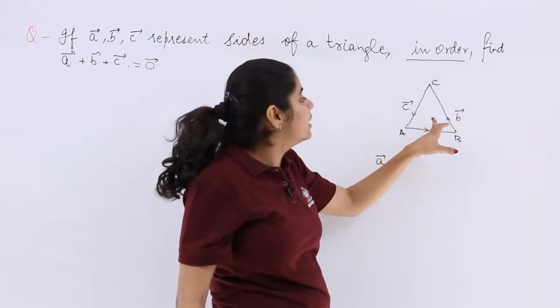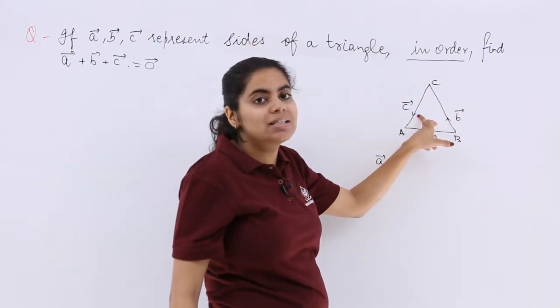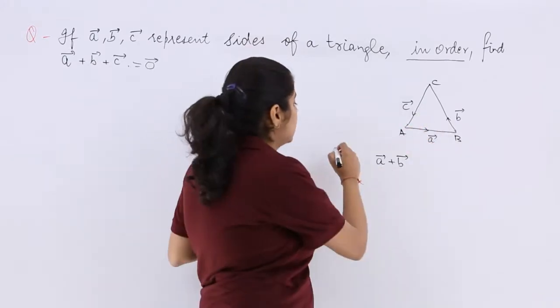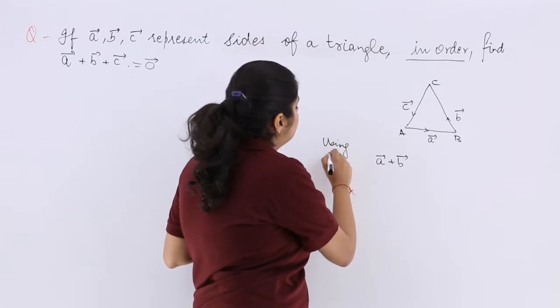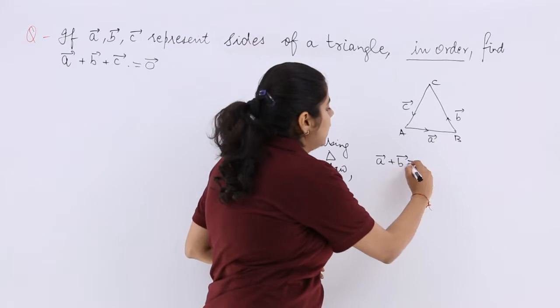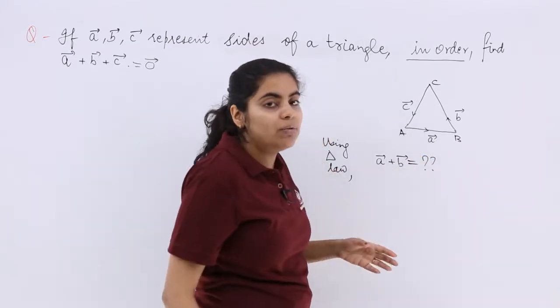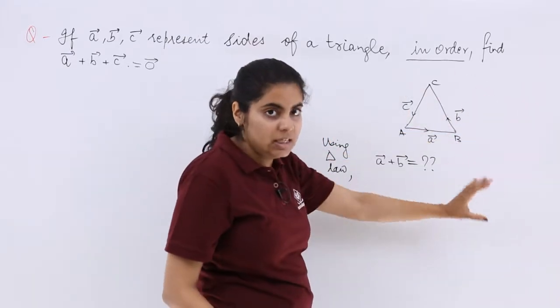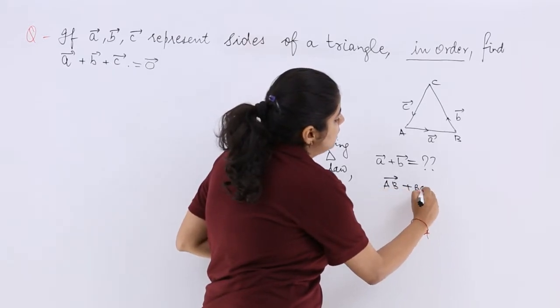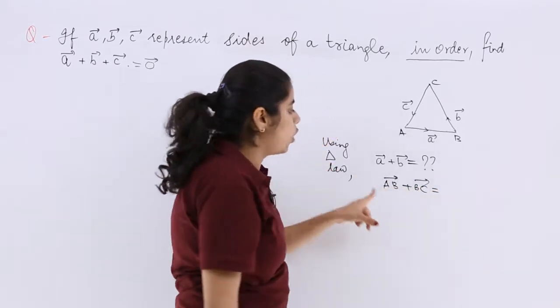But AC vector is not there. C vector is equal to what? It is minus of AC vector. Don't get confused. Let me tell you again. See, using triangle law of vector addition, I know that A plus B vector I have to find out. Now let me forget A, B, C in small. Let me write capital AB vector plus BC vector according to triangle law of vector addition.